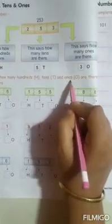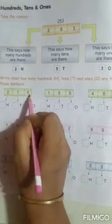Now let us do this. Write down how many 100s, that is H, 10s, that is T, and 1s, that is O, are there in these numbers. The first number given here is 216.